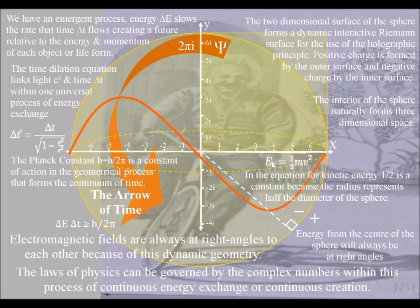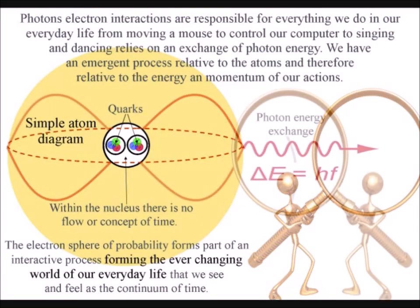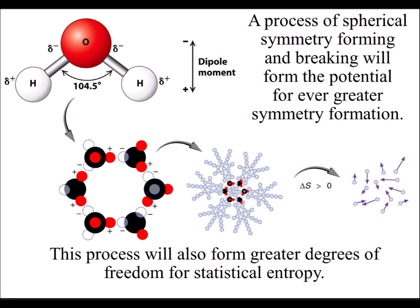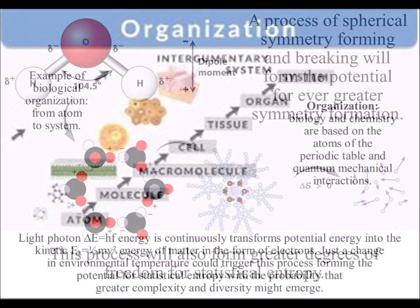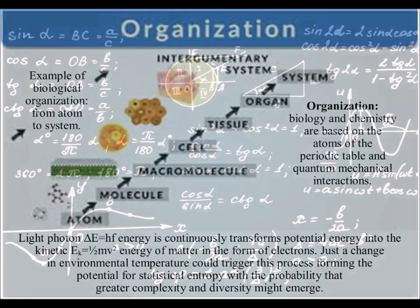The wave particle nature of light and matter in the form of electrons is forming an interactive process, or what I like to call a blank canvas that we can interact with. The circle geometry forms greater degrees of freedom for entropy, disorganization and equilibrium. It also has the potential to form greater symmetry, as in cell life, or even in ever more abstract mathematics.